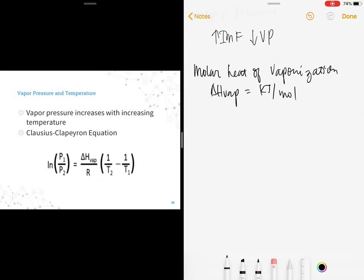Vapor pressure increases with increasing temperature. How do we calculate for that? We use the Clausius-Clapeyron equation. The formula is: ln(P1/P2) equals the molar heat of vaporization over R, your gas constant, times (1/T2 minus 1/T1).